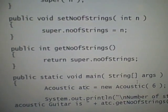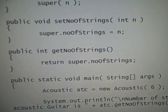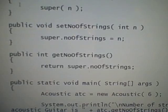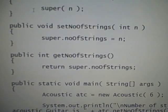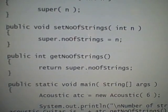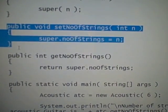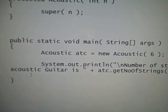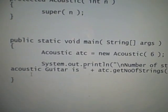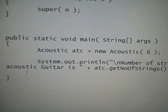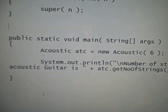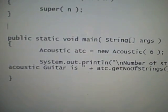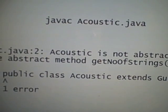What happens if you do not define those abstract methods in our subclass Acoustic? If I go ahead and remove these methods, in a way I'm ignoring those methods. Then what it does is it's going to cause a compile error, and we're going to see an error like this.